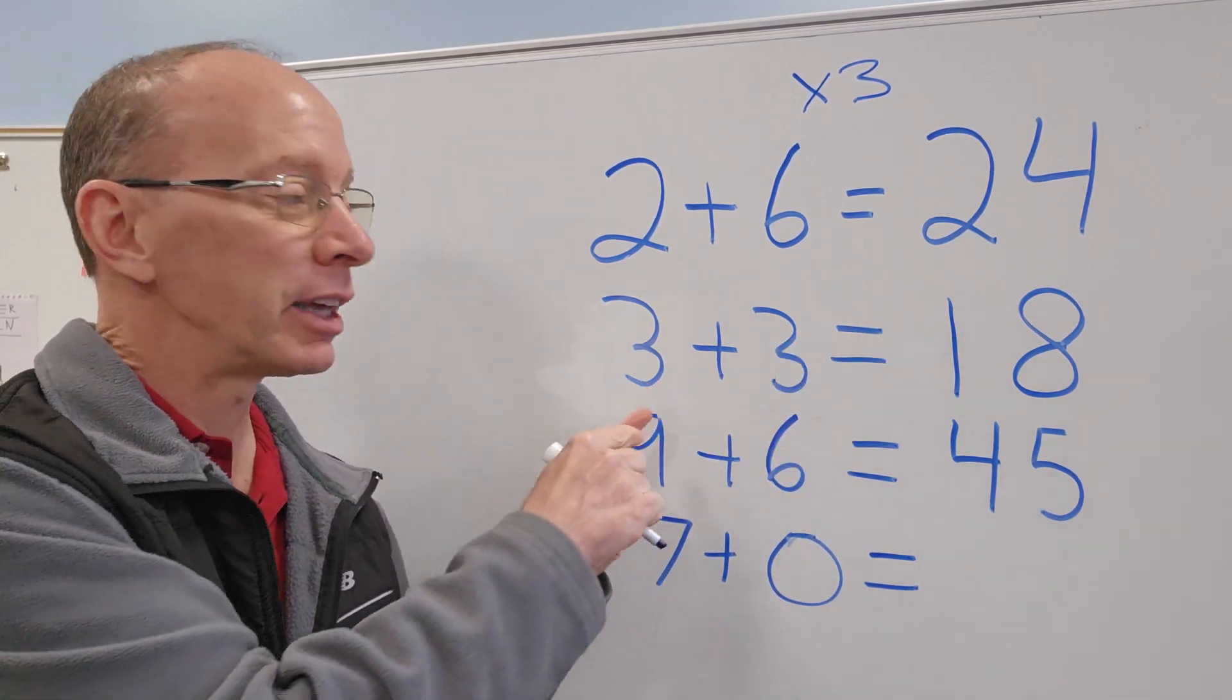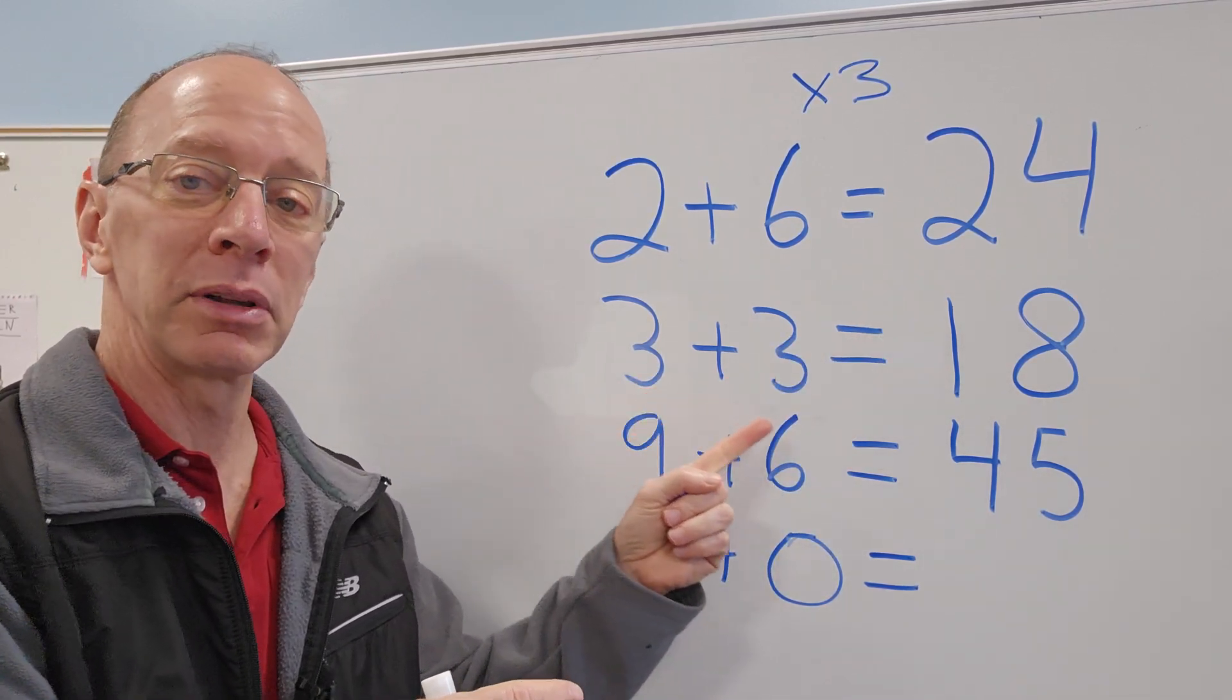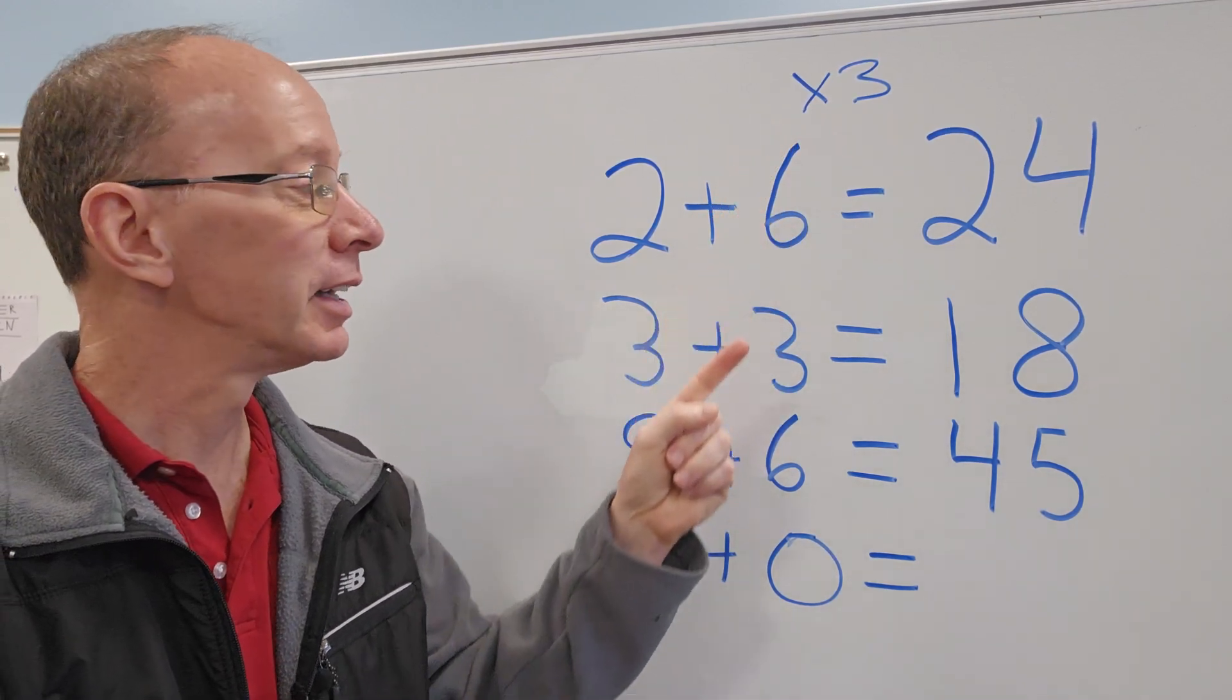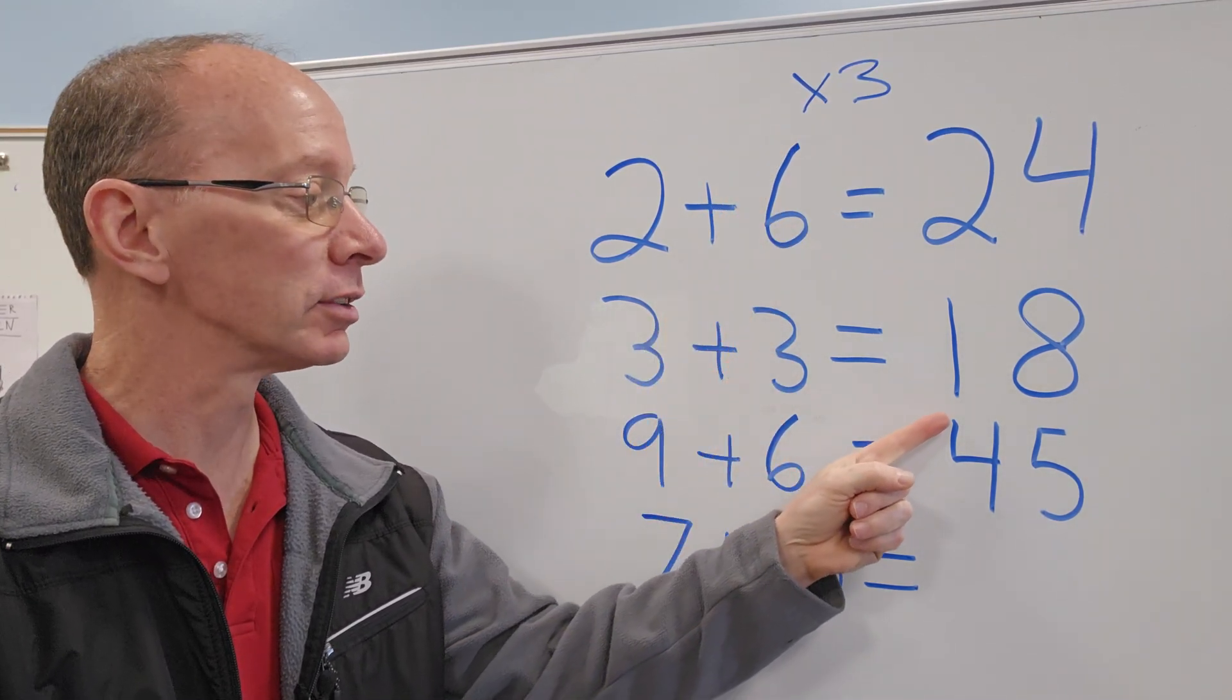Again, I did the same thing with line number 2. I took 3 plus 3 is 6, multiplied it by 3, and 6 times 3 equals 18.